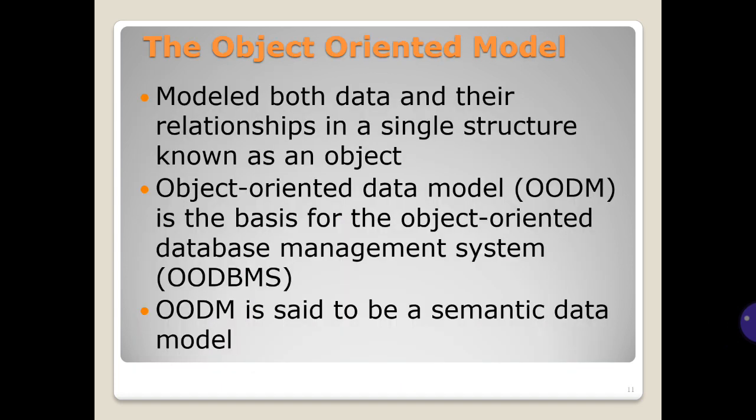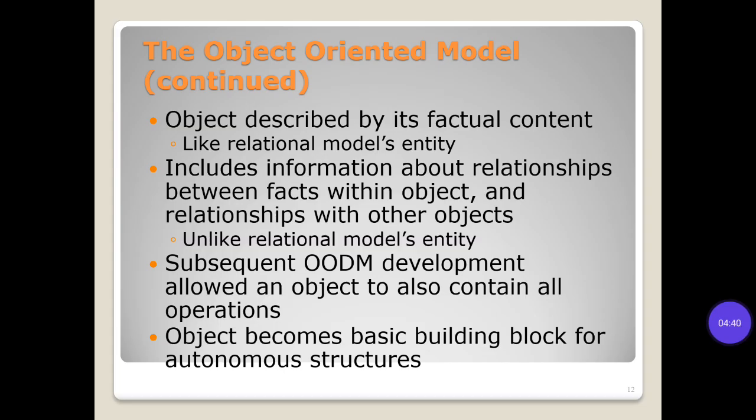The Object-Oriented model models both data and their relationships in a single structure known as an object. The Object-Oriented Data Model (OODM) is the basis for the Object-Oriented Database Management System (OODBMS). OODM is said to be a semantic data model. An object is described by its factual content — like relational model entities — but also includes information about relationships between facts within objects and relationships with other objects.